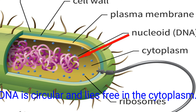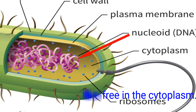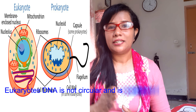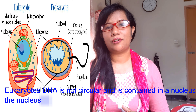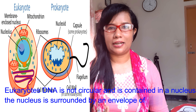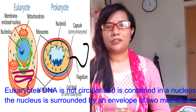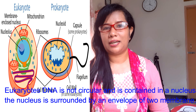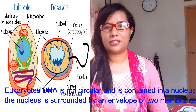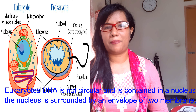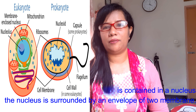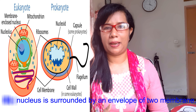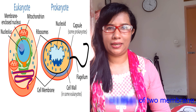Prokaryotic cell DNA is circular and lies free in the cytoplasm. Eukaryotic cell DNA is not circular and is contained in a nucleus. The nucleus is surrounded by an envelope of two membranes.